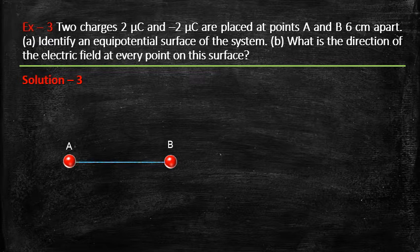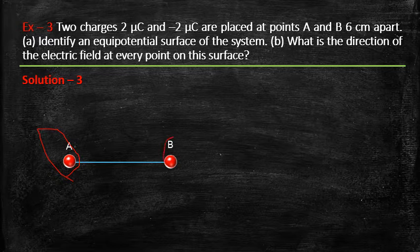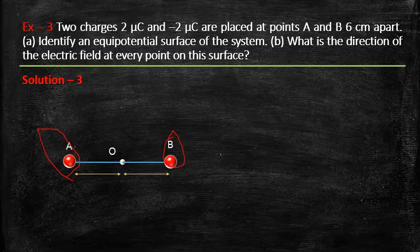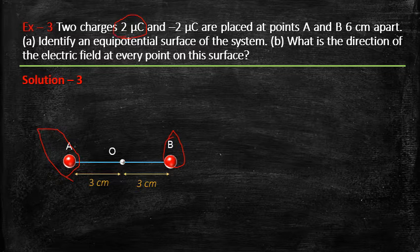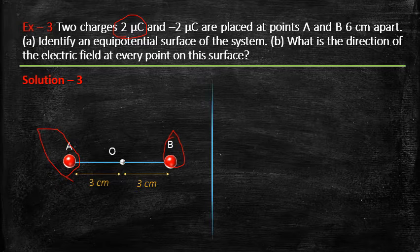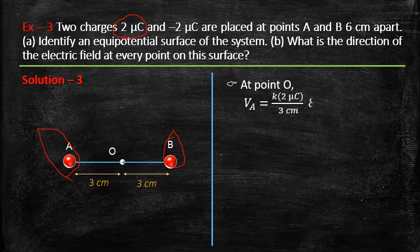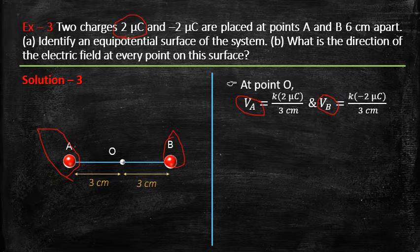Charge A is +2 microcoulombs and charge B is −2 microcoulombs. Consider the midpoint O — it is 3 cm from A and 3 cm from B. The potential at O due to A is k×(2 μC)/0.03 m, which is positive. The potential due to B is the same magnitude but negative since B = −2 μC. So the resultant potential at O is zero.